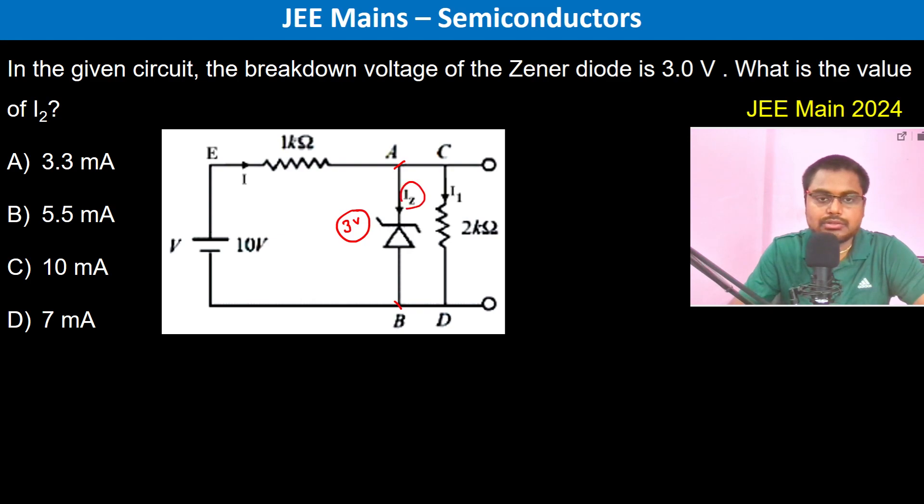We have to find I1 and I2. If this is 3 volts, then the potential difference across the resistor is also 3 volts.